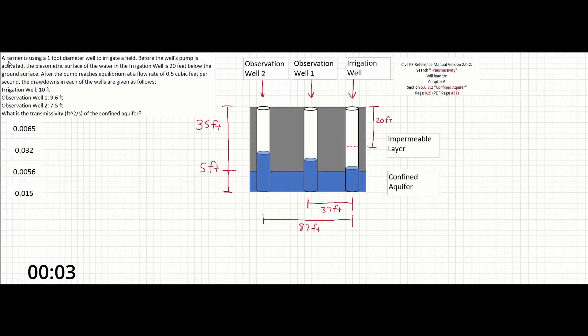In this problem, a farmer is using a one-foot diameter well to irrigate a field. Before the well's pump is activated, the piezometric surface of the water in the irrigation well is 20 feet below the ground surface. After the pump reaches equilibrium at a flow rate of 0.5 cubic feet per second,